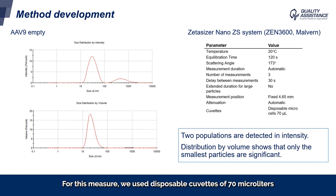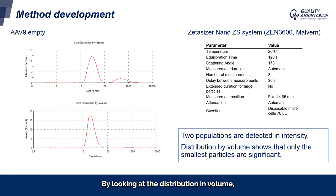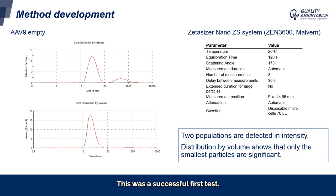For this measurement, we used disposable cuvettes of 70 µL, and the results by intensity show two populations: a first population around 30 nanometers corresponding to the expected size, and a second one around 500 nanometers. By looking at the distribution in volume, we see that the presence of the large population is not significant. This was a successful first test.